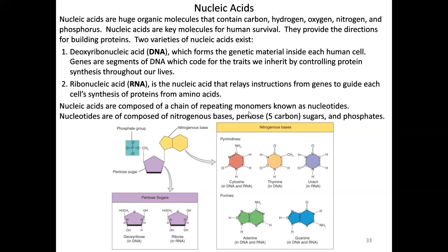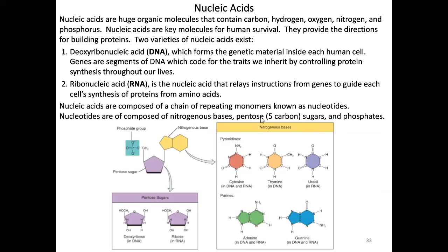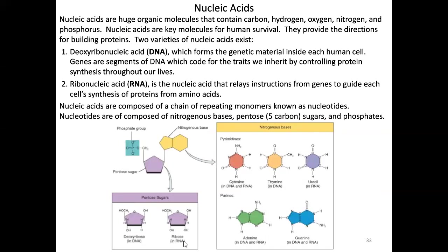Nucleic acids are composed of chains of repeating monomers known as nucleotides — the building blocks of DNA or RNA. A nucleotide has three components: a nitrogenous base (which contains nitrogen; there are five — cytosine, thymine, uracil, adenine, and guanine), a five-carbon pentose sugar (deoxyribose in DNA, ribose in RNA), and a phosphate group attached on the other side of the sugar.